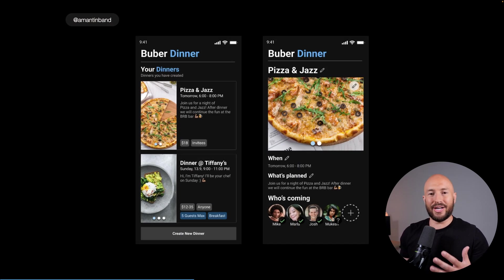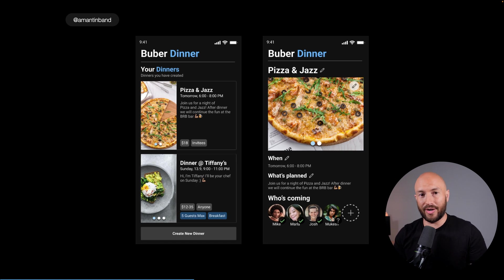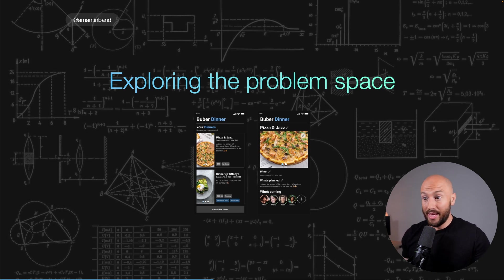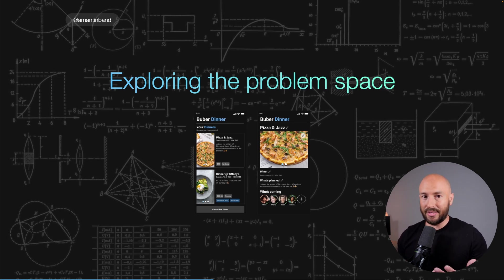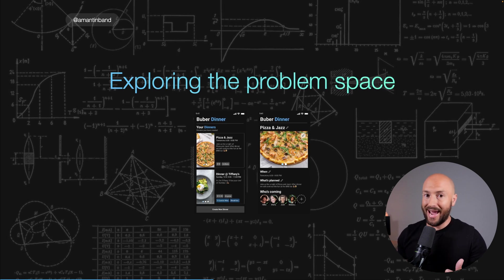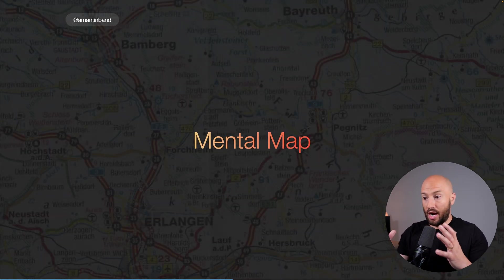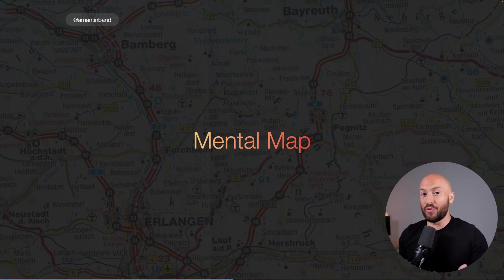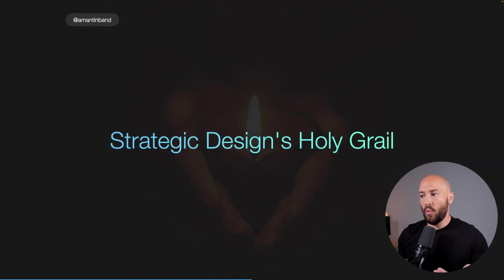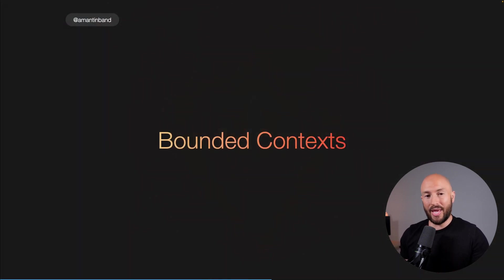Let's say we're building a dinner hosting platform — similar to how on Airbnb you can take your house and turn it into a hotel, here you can take your house and turn it into a restaurant. If we're looking at the problem space of this domain, we want to talk with domain experts using practices like event storming or event modeling, where we explore the problem space and understand the different processes and behaviors within our domain. Most importantly, we want a mental map of the problem space — and this is the holy grail of the strategic phase — what are the bounded contexts within our system?